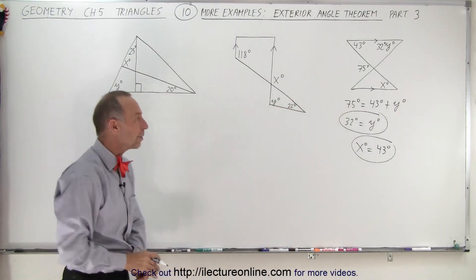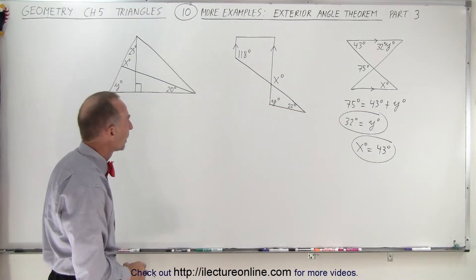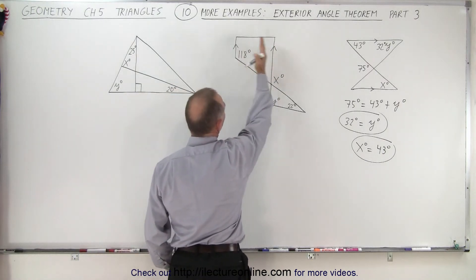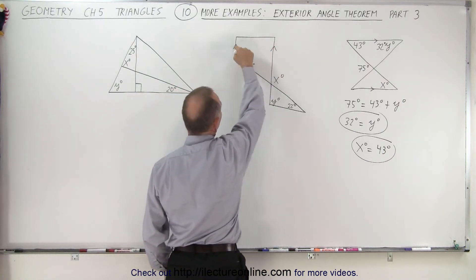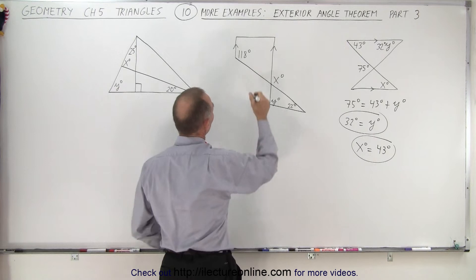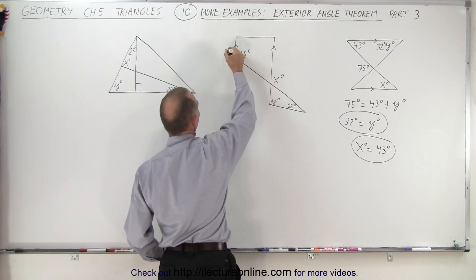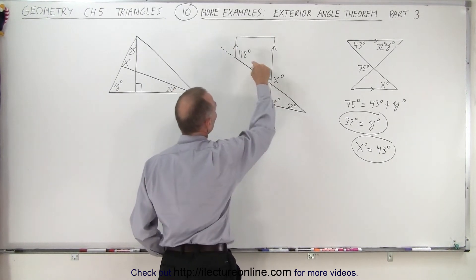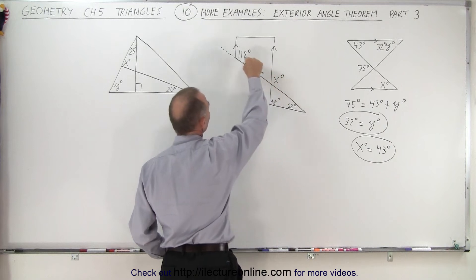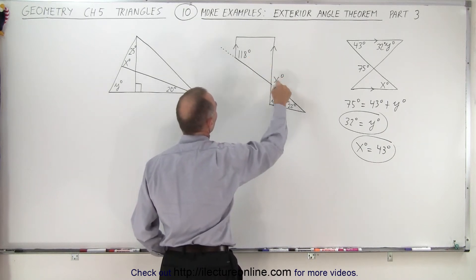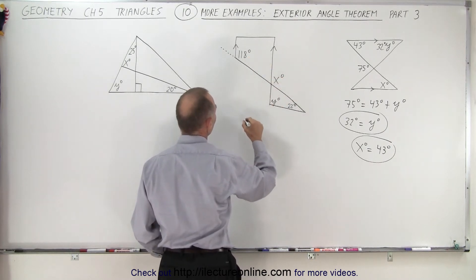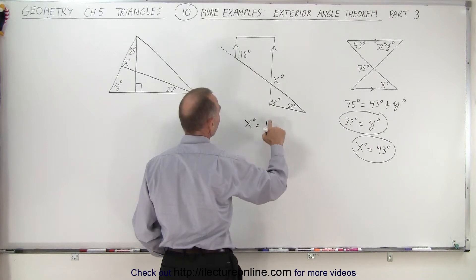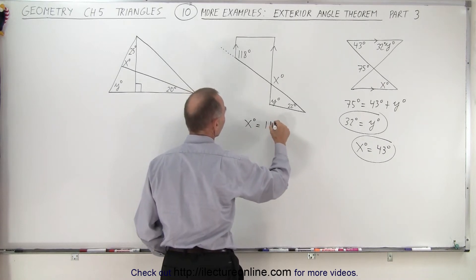Now we go on to our next problem. Again these two lines must be parallel, as indicated, and notice we have a transversal if we continue the line. That means these two corresponding angles must be equal to one another, which means x degrees must equal 118 degrees.